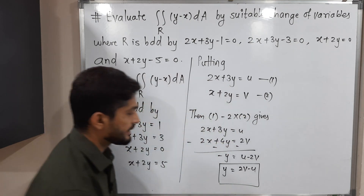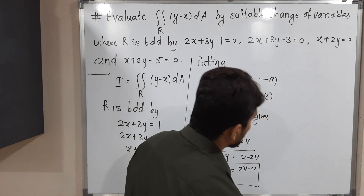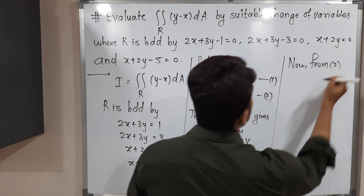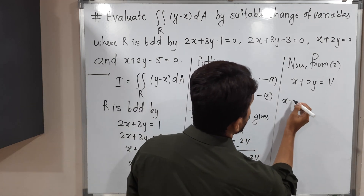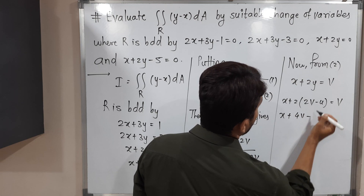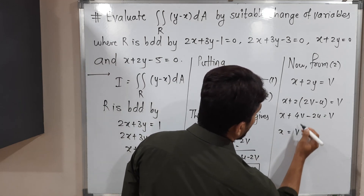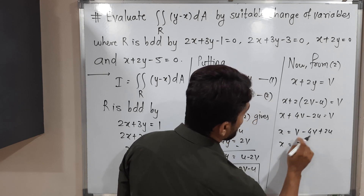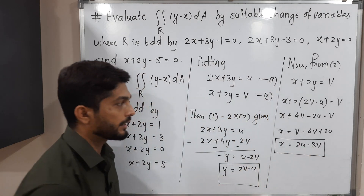Now we find x by substituting y equal to 2v minus u into equation 2: x plus 2(2v minus u) equals v, so x plus 4v minus 2u equals v. Shifting terms gives x equal to 2u minus 3v. We now have both x equal to 2u minus 3v and y equal to 2v minus u.